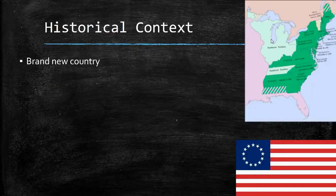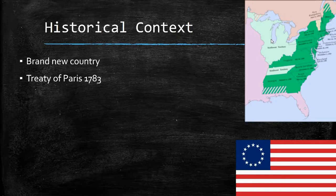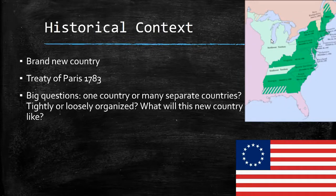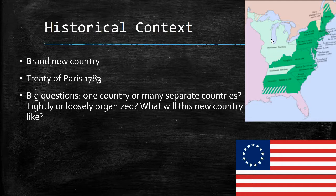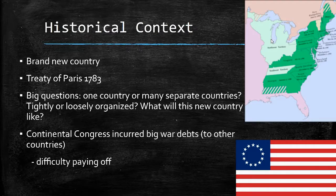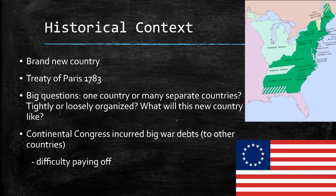The United States affirms itself as a brand new country with the Treaty of Paris in 1783, officially ending the Revolutionary War. While the war was won, the Founding Fathers still had to tackle big questions: Will the former colonies consolidate into a large country, or govern themselves as independent countries? If one large country, will they be tightly organized like the British government, or loosely organized more like the Iroquois Confederacy? Also, an immediate pressing issue were the big war debts that the Continental Congress incurred fighting the British. The money they attempted to print and circulate was nearly worthless, and if the United States did not get its act together, there was a chance it would not exist for long.